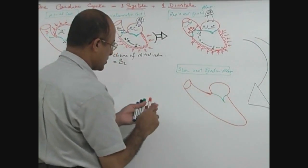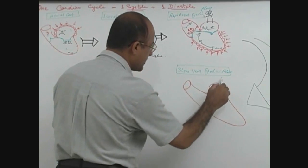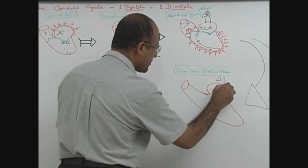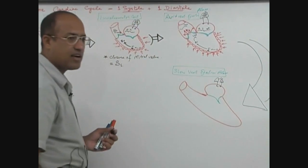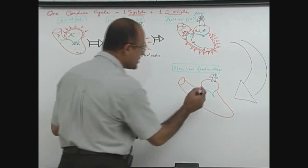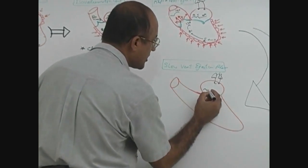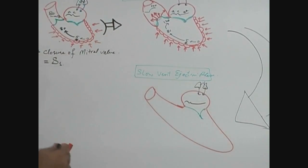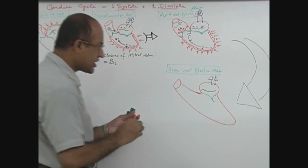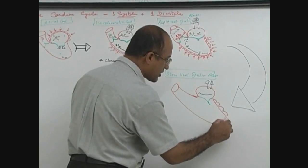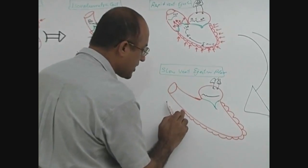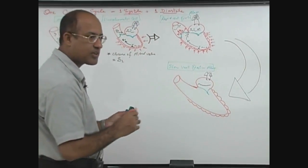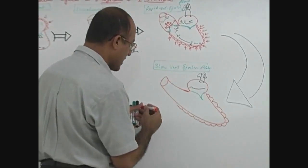So mitral valve is closed, and at this particular phase, still atrium is acting as a reservoir. It means that V wave is still continuing. Ventricle is still contracting, but because some amount of the blood has been ejected, pressure in the ventricle is not that much and pressure in the ventricle starts falling.